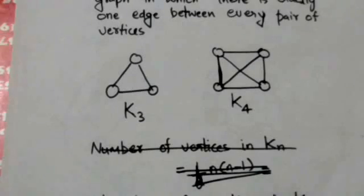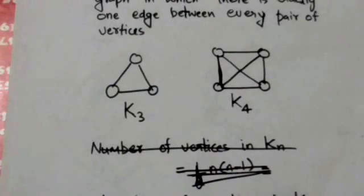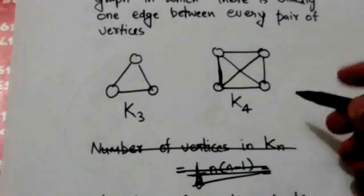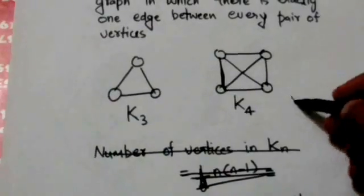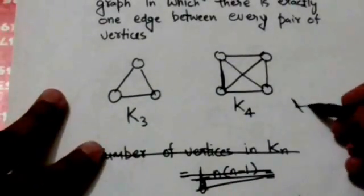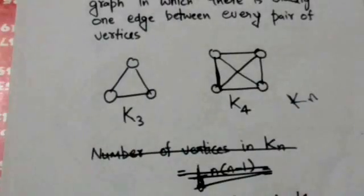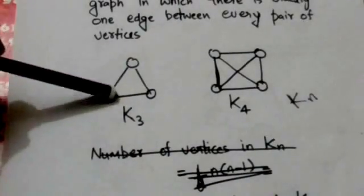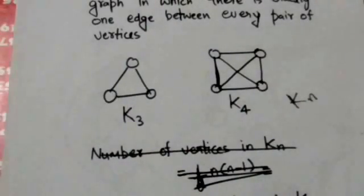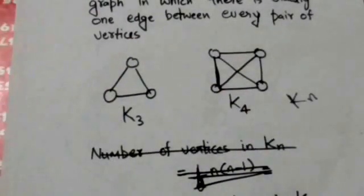A complete graph having n vertices is denoted by Kn. Therefore, this graph is K3 and this graph is K4.